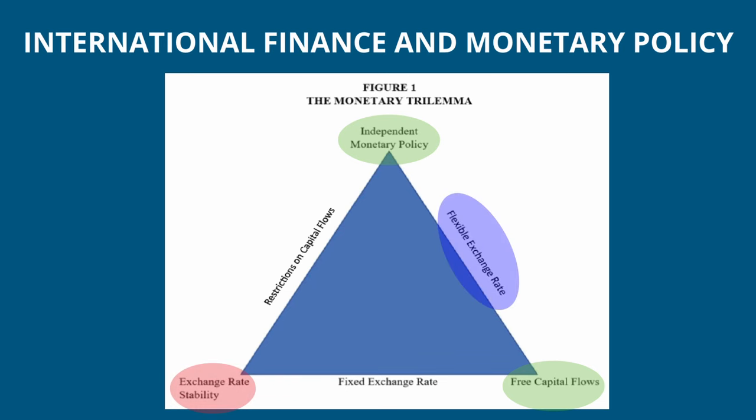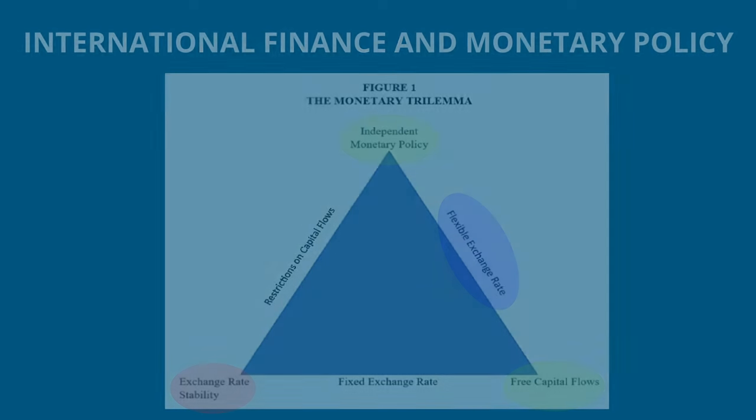Conversely, if a country wants to maintain monetary policy autonomy and pursue capital mobility, it will have to sacrifice exchange rate stability and accept fluctuating exchange rates. This allows the currency to fluctuate based on market forces, which may introduce uncertainty and volatility in international trade.